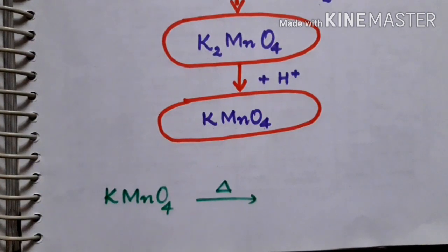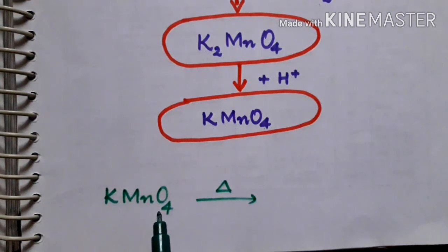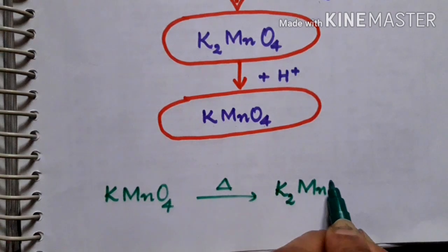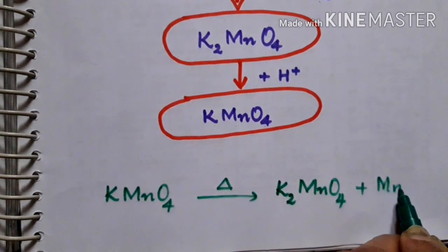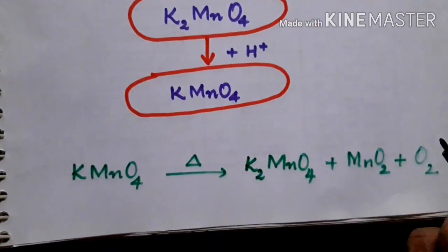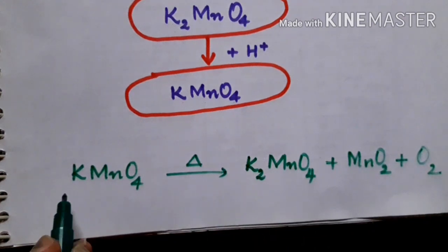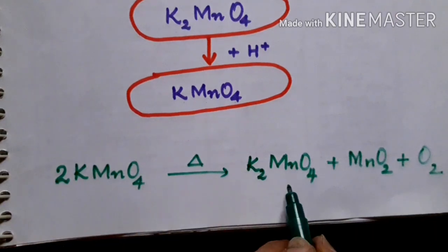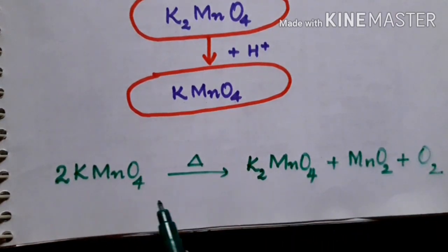Now we will see what happens to potassium permanganate on heating. KMnO4 on heating is converted to green colored potassium manganate, manganese dioxide, and oxygen. The equation involves 2KMnO4, giving a total of 8 oxygen atoms on the left side.